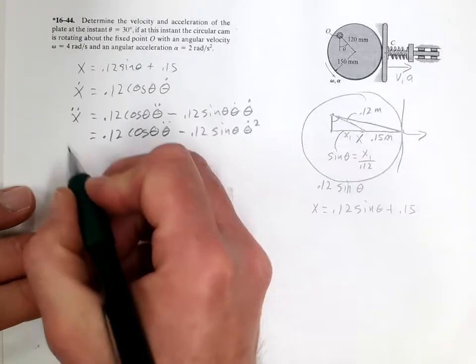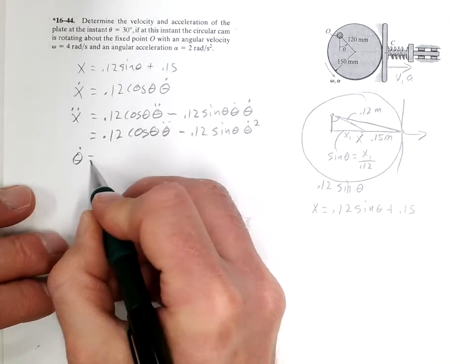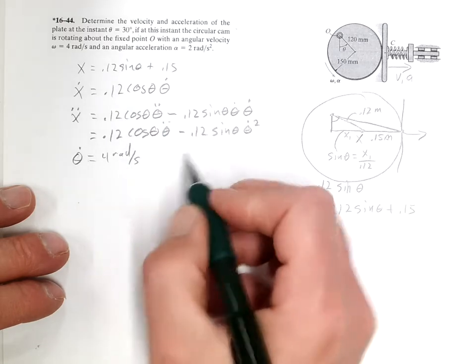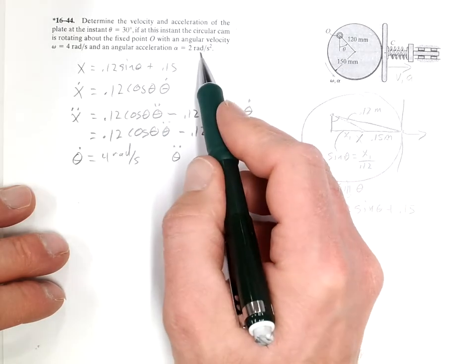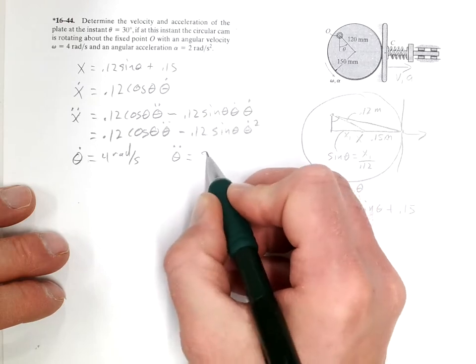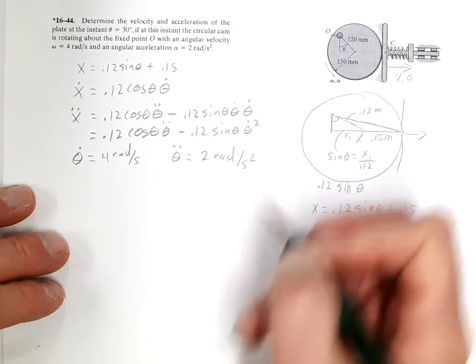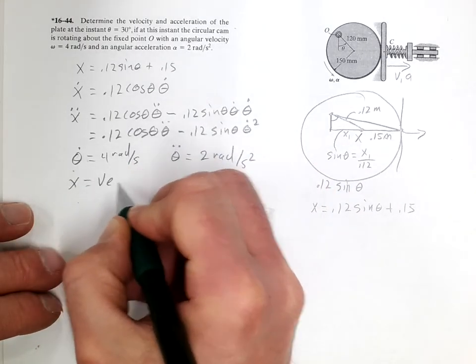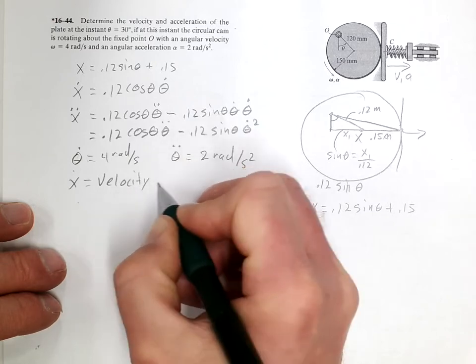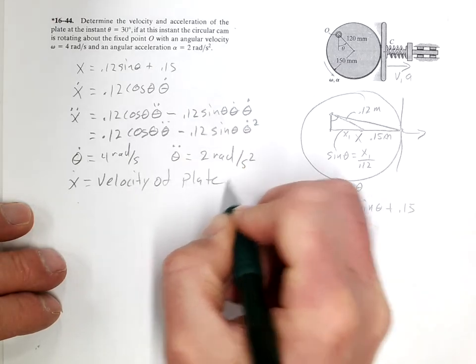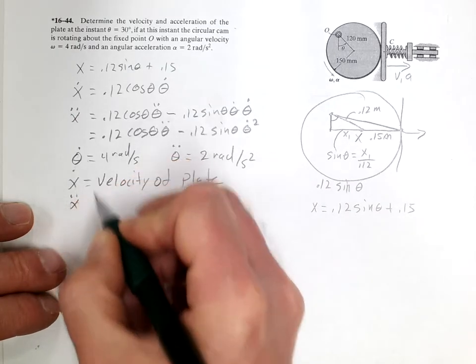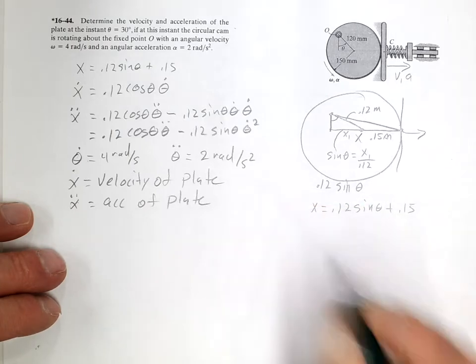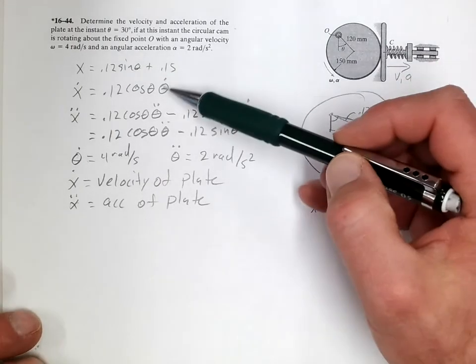Now, theta dot is omega. Theta double dot is alpha. X dot is the velocity and X double dot is the acceleration. Now all you have to do is substitute everything into these two equations.